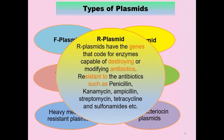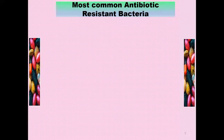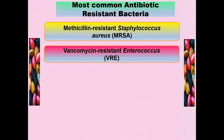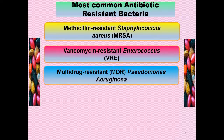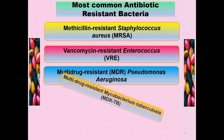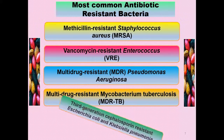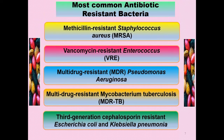R-plasmids confer resistance to antibiotics such as penicillin, kanamycin, ampicillin, streptomycin, tetracycline, and sulphonamides. The most common antibiotic-resistant bacteria include methicillin-resistant Staphylococcus aureus (MRSA), vancomycin-resistant Enterococcus, multidrug-resistant Pseudomonas aeruginosa, multidrug-resistant Mycobacterium tuberculosis, and 3rd-generation cephalosporin-resistant E. coli and Klebsiella.